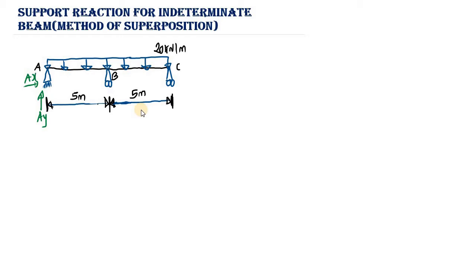At point B we have one unknown reaction By, because it is a roller support. At point C we have one unknown reaction Cy. So we are having four unknown reactions in total. We are used to having three unknown reactions for a statically determinate beam, but here we have four.